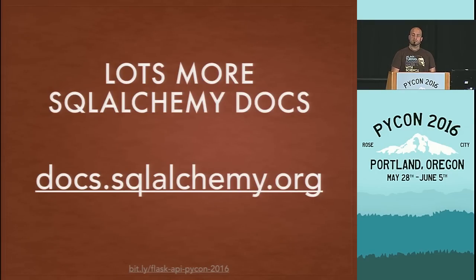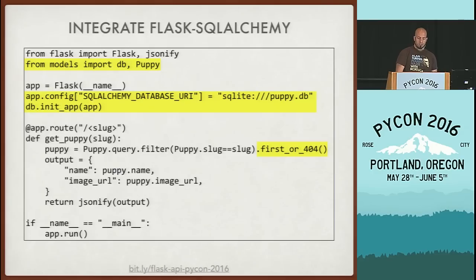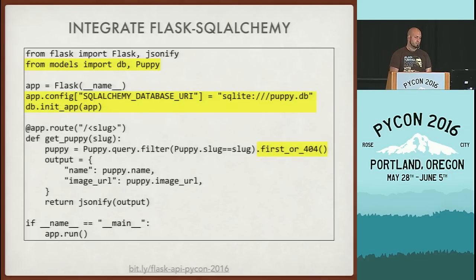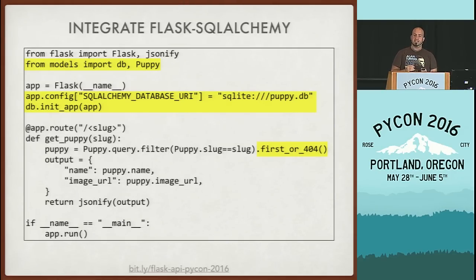There's a lot more you can do with SQLAlchemy, but that's its own separate talk — check out the documentation. We've already defined the model for our puppy object. Here we're going to integrate that model into the view we already had — importing it, adding a bit of configuration to use a SQLite database. You can also use MySQL, Postgres, Oracle, or many other options that SQLAlchemy supports. We rewrite our get_puppy view to do a database query instead of pulling from the dictionary in the code.